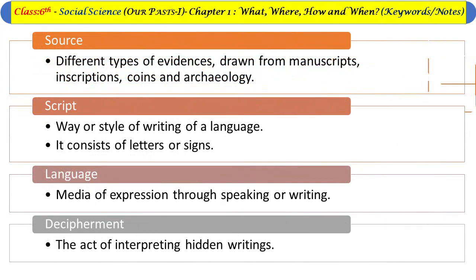Other keywords include: source — different types of evidence drawn from manuscripts, inscriptions, coins, and archaeology; script — the way or style of writing of a language, consisting of letters or signs; language — the medium of expression through speaking or writing; and decipherment — the art of interpreting hidden or unknown writing.